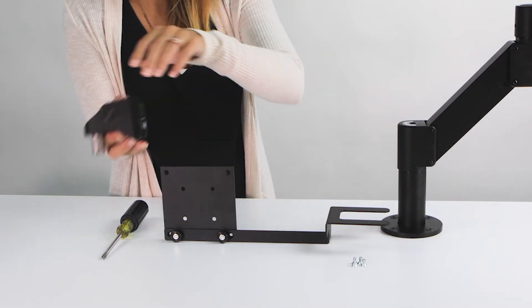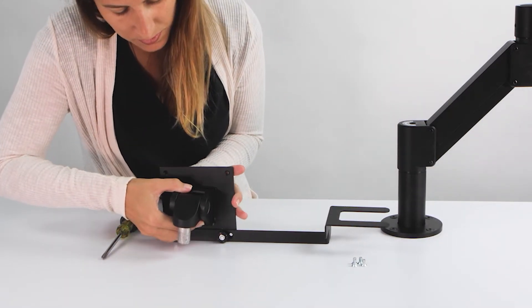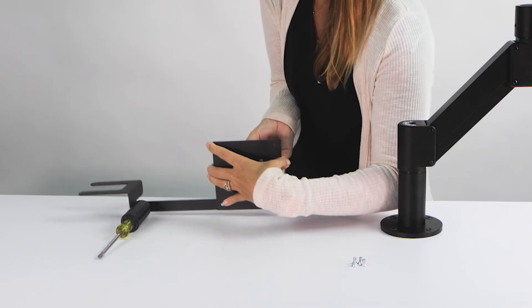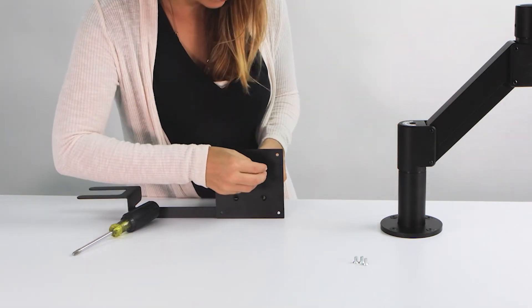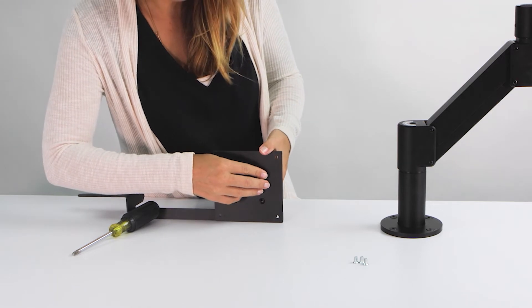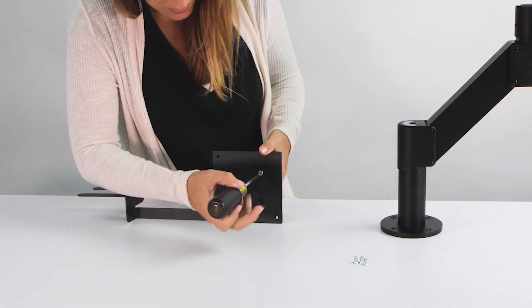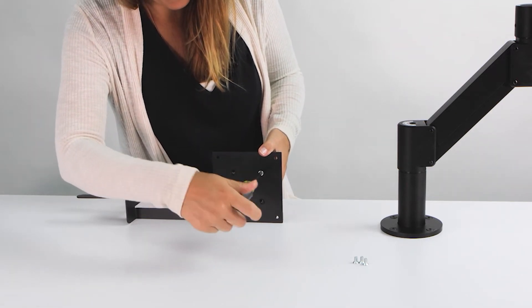Step 4. Connecting Monitor Tilter. Take the monitor tilter and connect to the VESA plate using the four 1032 PF HMS Phillips head screws. The tilter should be on the same side as the scanner bracket facing down.